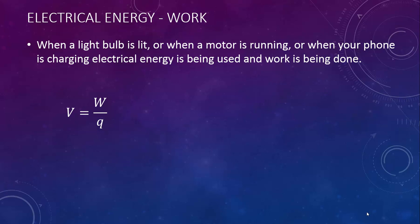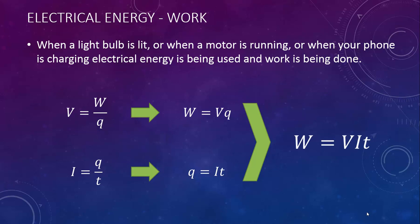Here's the equation we learned a while ago for potential difference. We could rearrange this equation and solve it for work. Here's the equation for current. We could rearrange this equation so it is solved for q. Now we want to put these together. If q equals i times t, then w could equal v times i times t.